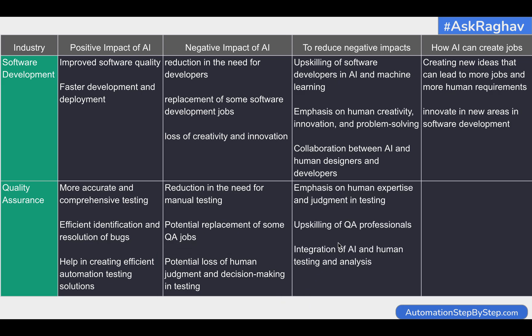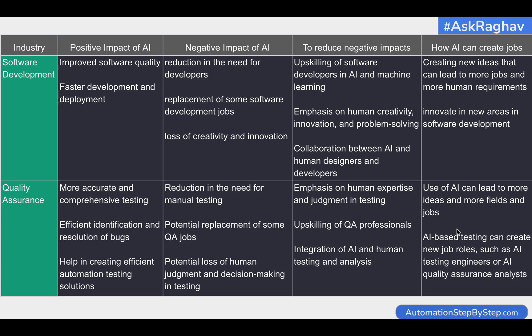To curb these negative impacts, we have to focus on and give importance to human expertise and judgment. We should be upskilling our QA professionals, and we have to integrate AI and human testing and analysis — this integration is very important both in development and in testing. How AI can create more jobs: it can lead to more ideas and more implementation, leading to more jobs. AI-based testing can create new roles such as AI testing engineers or AI quality assurance analysts. There can be some replacement of jobs, but some new jobs as well.